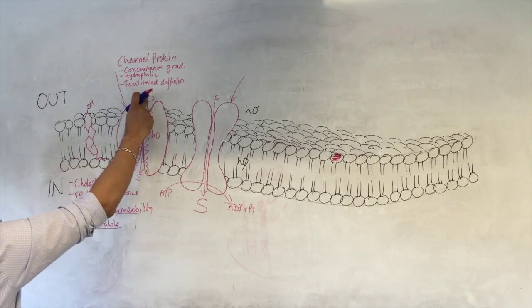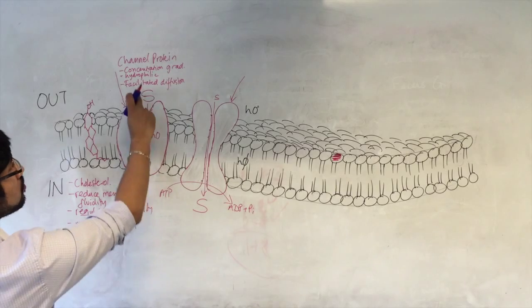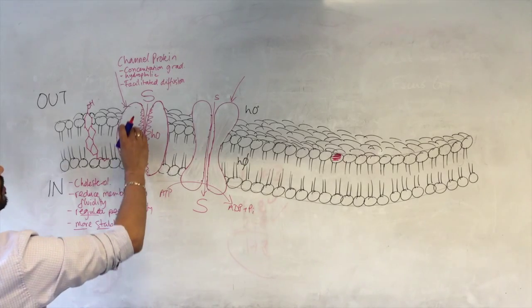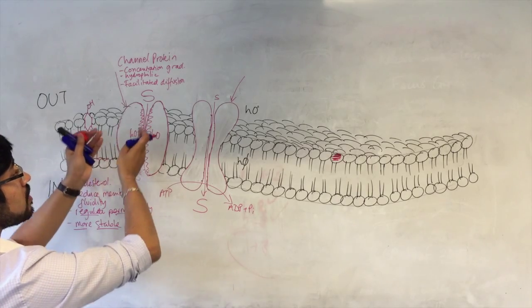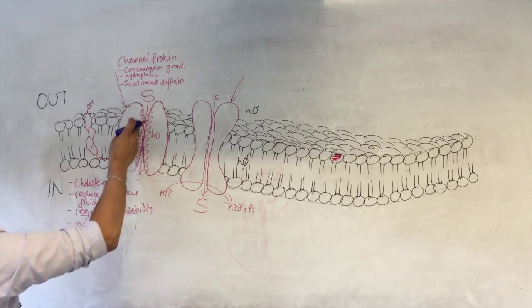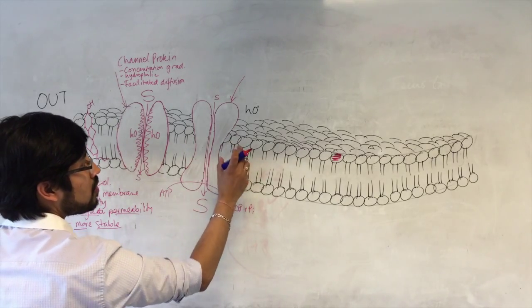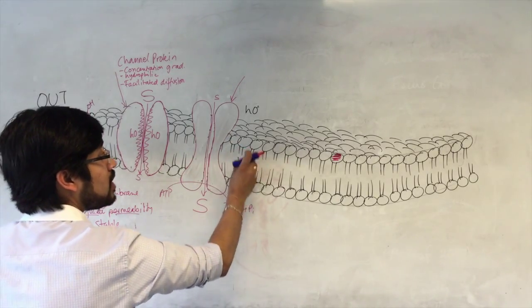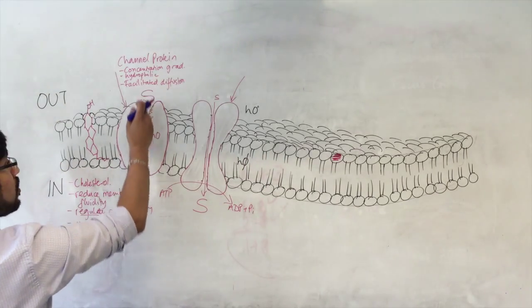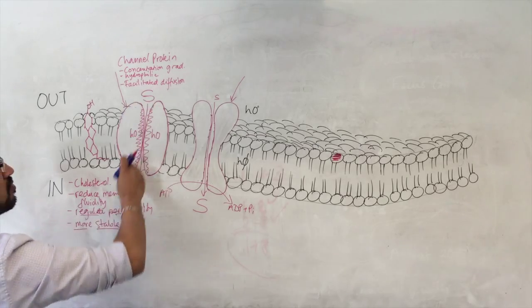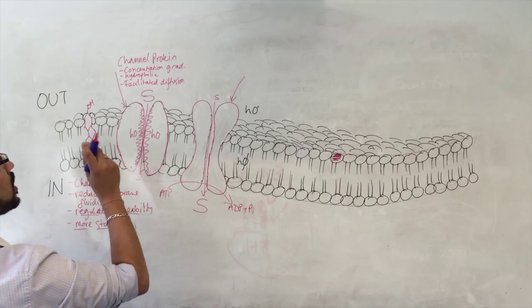Here I'm just showing that any kind of solute will be able to move through the channel protein, because the channel protein kind of provides a hydrophilic region that the solute might find it more easy to move through compared to the very hydrophobic inner part of the membrane. So the channel protein allows molecules, hydrophilic molecules, to move down their concentration gradient in facilitated diffusion.